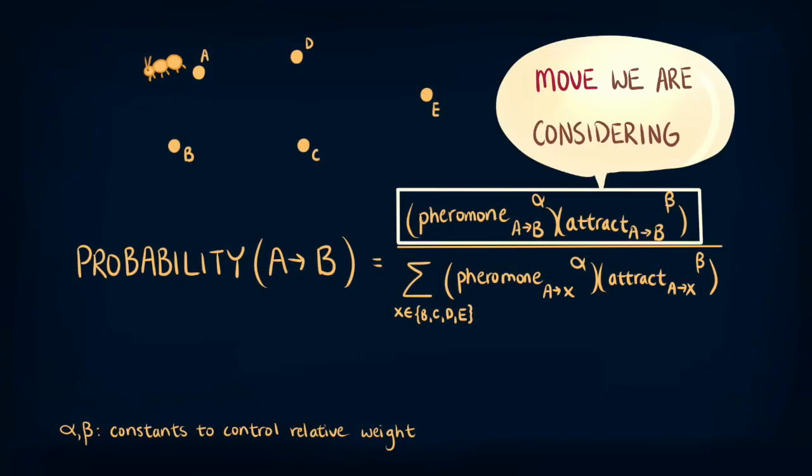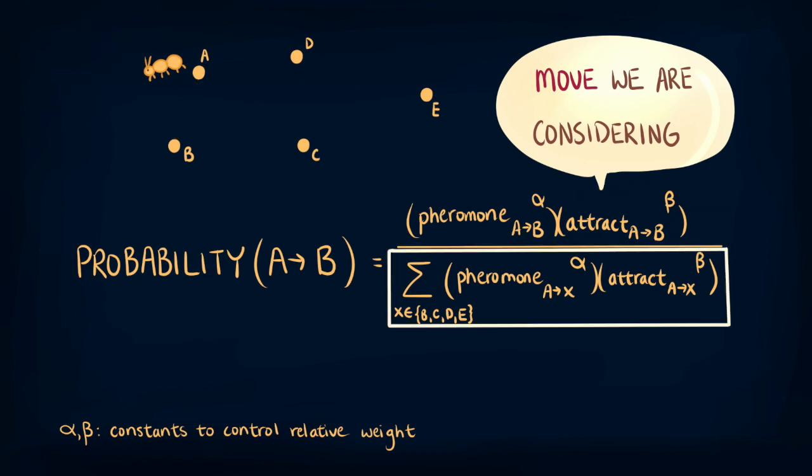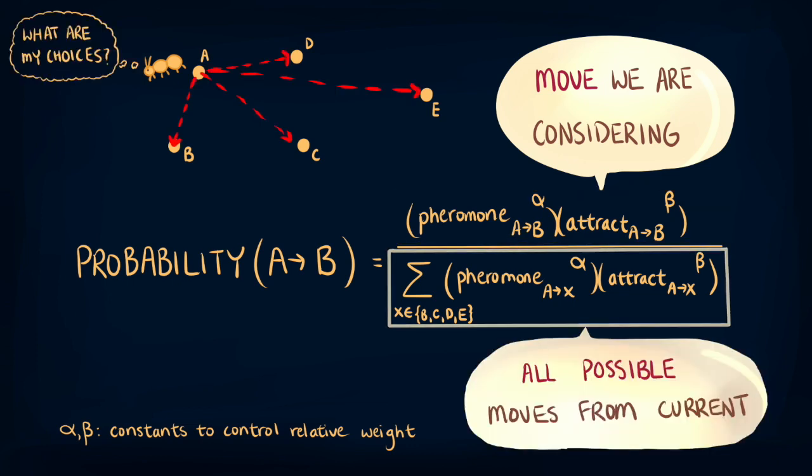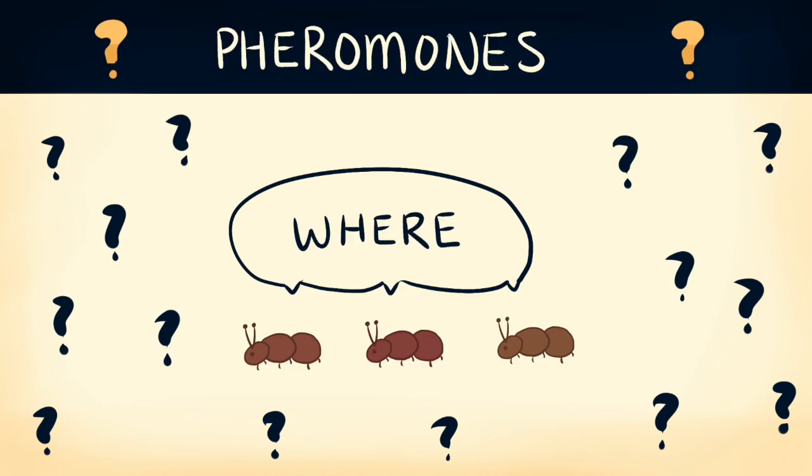The numerator is for the move we are considering A to B, and the denominator is the sum of all possible moves from A. But where does this pheromone come from?